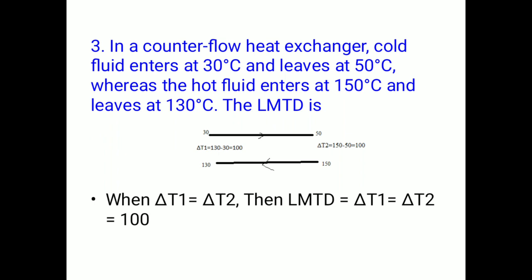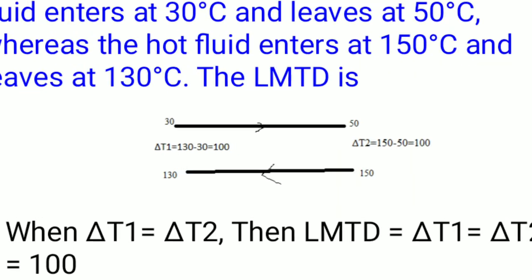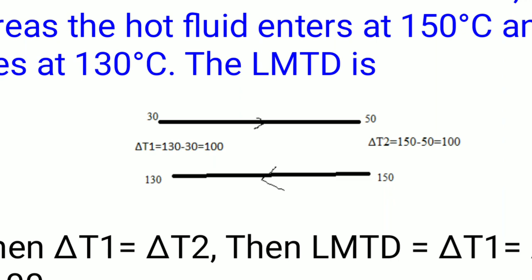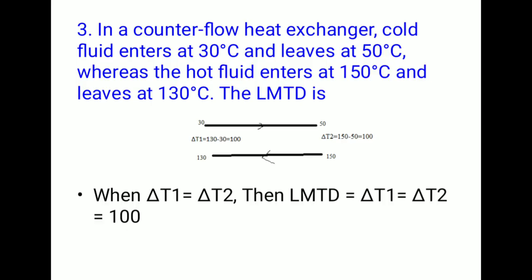Numerical 3: In a counter-flow heat exchanger, the cold fluid enters at 30°C and leaves at 50°C, while the hot fluid enters at 150°C and leaves at 130°C. Delta T1 = 130 − 30 = 100°C and delta T2 = 150 − 50 = 100°C. When delta T1 equals delta T2, LMTD equals delta T1 = delta T2 = 100°C.